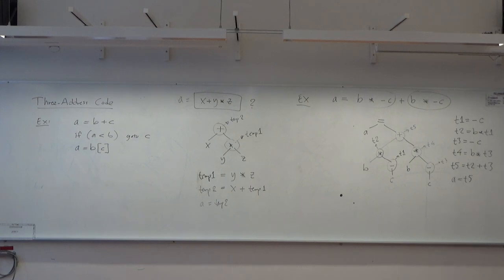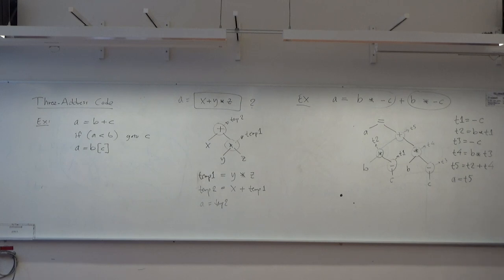A student points out an error: t5 should be t2 plus t4, not t2 plus t3. Corrected: t5 = t2 + t4. Now we hopefully have the correct three-address code.